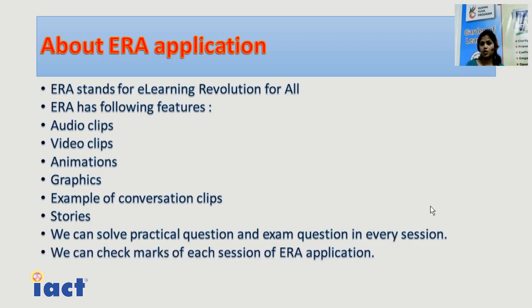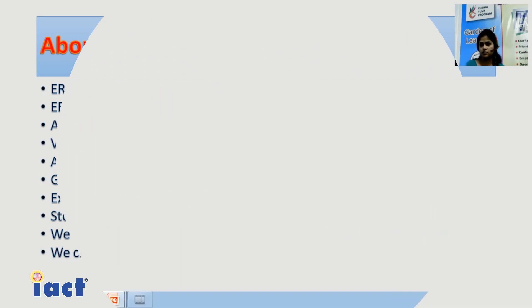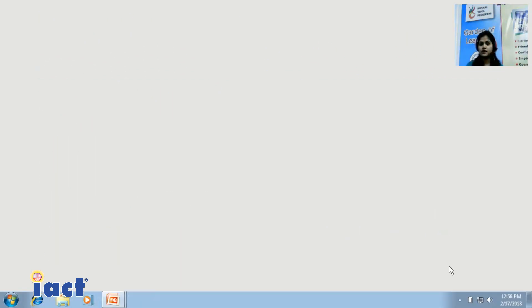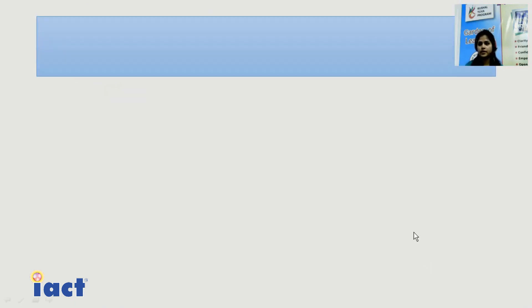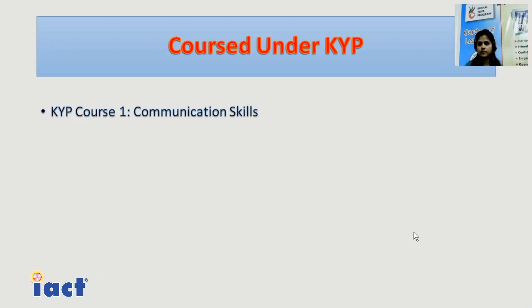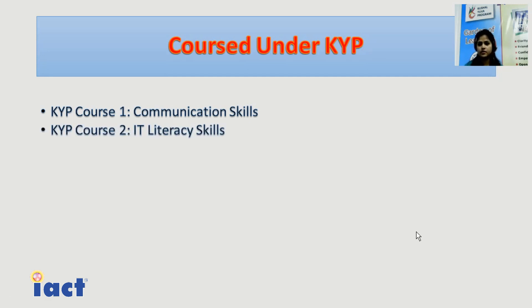We can also check marks of each session in the ERA application. Now, the courses under KYP. Basically, KYP provides three types of courses: Course 1 — Communication Skills, Course 2 — IT Literacy Skills, and Course 3 — Soft Skills.